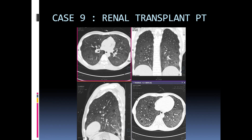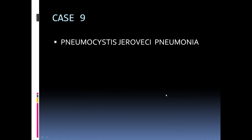A renal transplant patient's HRCT images show diffuse bilateral abnormality without any medial, lateral, or pancho-basal gradient. The predominant abnormality is ground glass opacity and there are few lobular areas of sparing. The diagnosis in such a case is PCP pneumonia. The differential is CMV pneumonia, but in CMV we may get nodules and the appearance may not be so homogeneous. Additionally, pleural effusion may sometimes be found in CMV pneumonia.